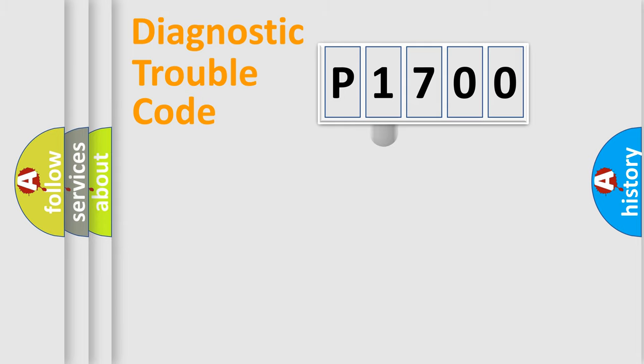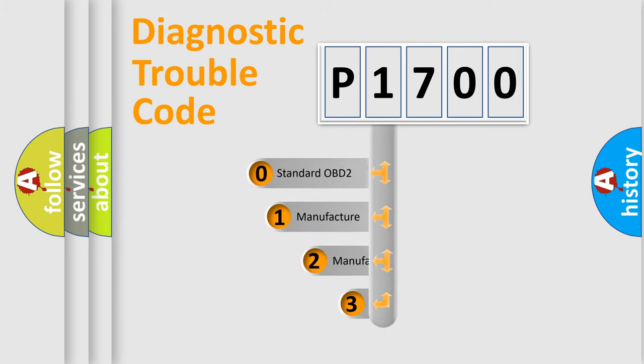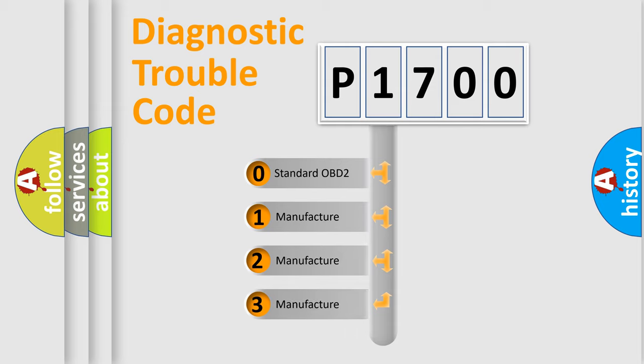This distribution is defined in the first character of the code. If the second character is expressed as zero, it is a standardized error. In the case of numbers 1, 2, or 3, it is a manufacturer-specific error.